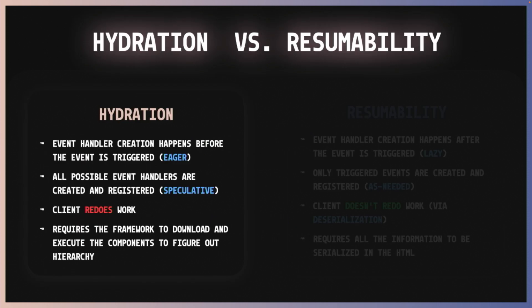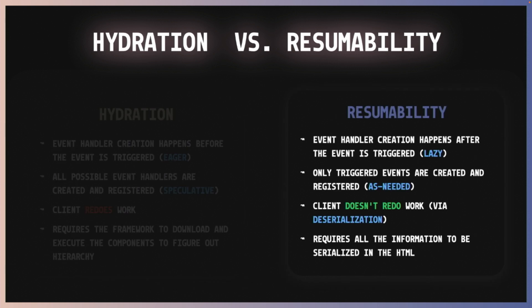So if we compare to the traditional hydration, we can notice a few differences. The first one — and I'm not talking about progressive or selective or anything, just traditional hydration — first, it is eager because the event handler creation happens before those events are triggered. Also, all of the handlers are created, so it's kind of speculative because those event handlers might not be used in the end. Also, you have the client redoing a lot of work that was done in the server previously. With resumability, you have the complete opposite. It is lazy because the event handler creation happens only when the event is triggered, and only the triggered events are created and registered.